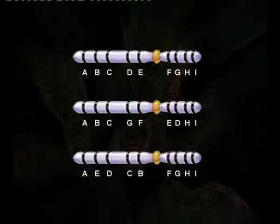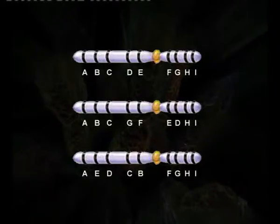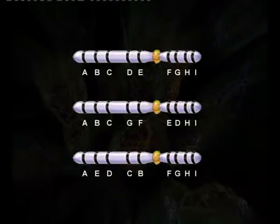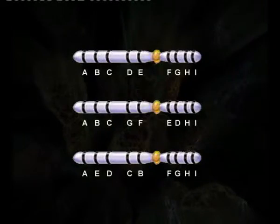In the case of paracentric inversion, the segment b c d e is broken from the main chromosome and, after its reunion, the order of genes is now changed to a e d c b f g h i.